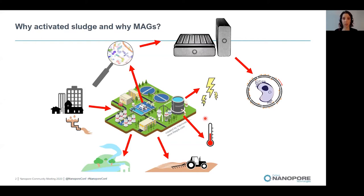So firstly, why activated sludge? Activated sludge is the microbial process that we use to treat our wastewater. It's very important and it's used worldwide, because if we didn't treat our wastewater, nutrients such as phosphate and nitrogen would end up going downstream, causing problems like eutrophication, leading to fish death, and you'd also get some pathogens, which is bad for public health.